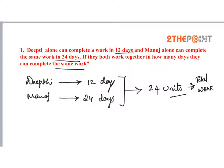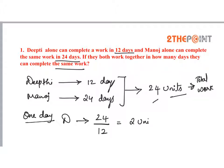Now, if the total work is 24 units, this 24 units of work is done by Deepthi in 12 days and by Manoj in 24 days. We can find how much work each has done in one day. Work done by Deepthi in one day is 24 divided by 12, which is nothing but 2 units per day. That is, Deepthi does 2 units of work in one day.